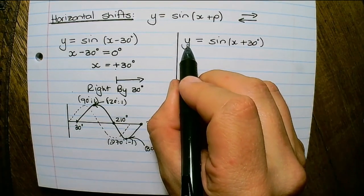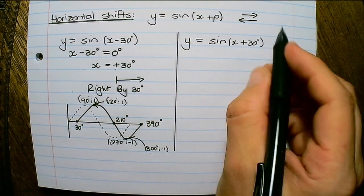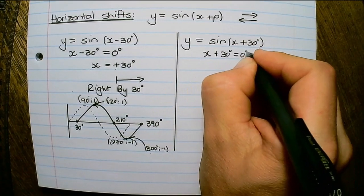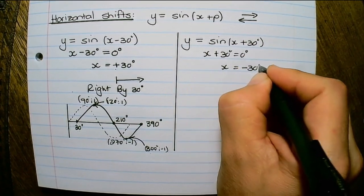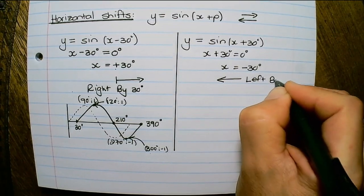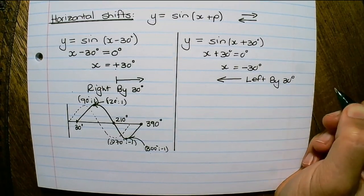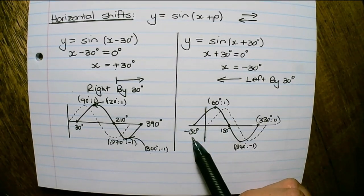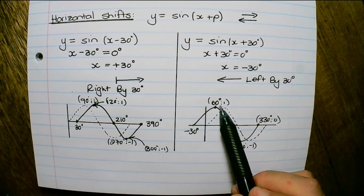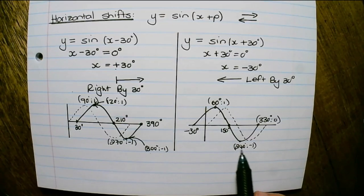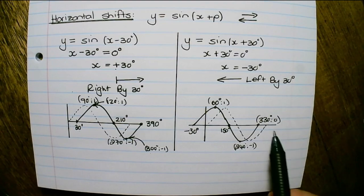If we have y equals to sin(x plus 30 degrees), then x plus 30 degrees equals 0, therefore x equals negative 30 degrees — that means we are shifting left by 30 degrees. So the sin function starts at negative 30 degrees, reaches a maximum at 60 degrees, cuts through the x-axis at 150 degrees, has a minimum at 240 degrees, and ends at 330 degrees.